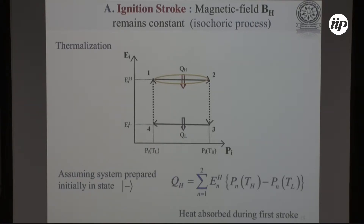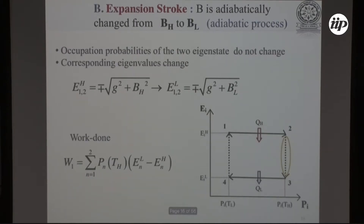Step 1 to 2 is an isochoric heating process: we fix the magnetic field at a certain value and allow the internal state of the ion to interact with the thermal environment. The vibrational cold bath is also present, so both the internal state and the motional state thermalize with the thermal environment. We calculate the occupation probability after thermalization — assuming the system is initially in the ground state — and compute the heat transferred from the thermal environment to the system. Step 2 is the adiabatic process: the condition is no heat exchange, but we do not switch off the thermal environment.